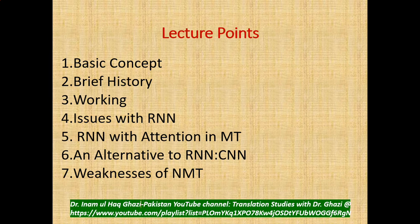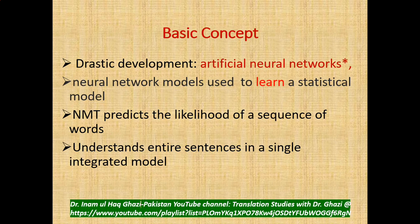I have divided this topic into seven points: a basic concept and a very brief history; working of neural machine translation; issues with RNN; RNN with attention in machine translation; alternative to RNN, which is CNN; and the weaknesses of NMT. So let's start with the basic concepts.